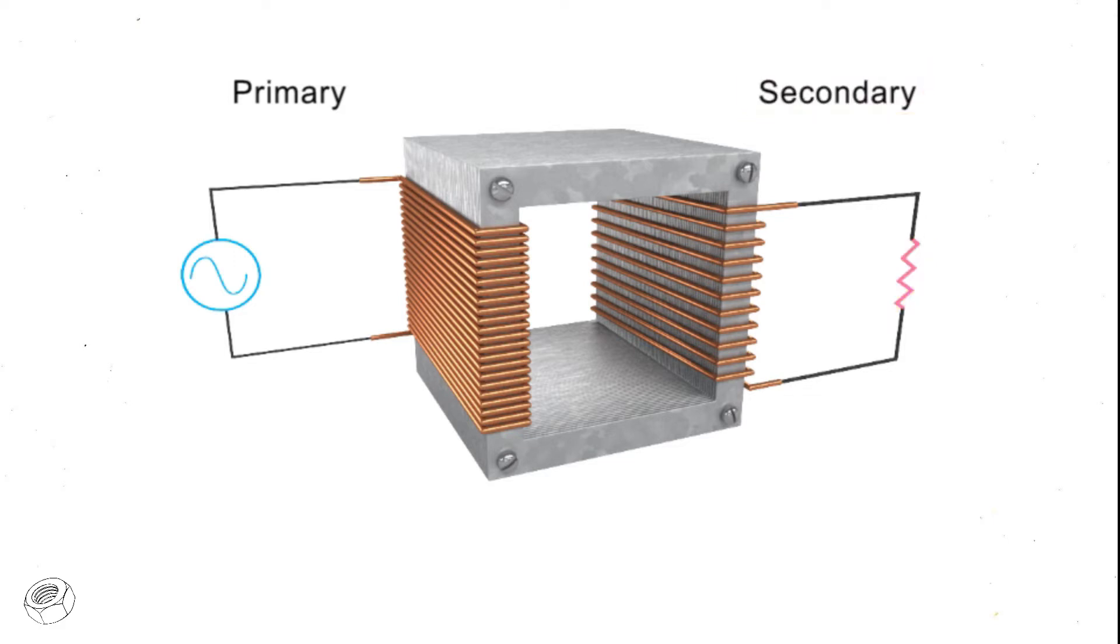The two coils are well insulated from each other and do not form a physical electrical connection. This gives a transformer its unique electricity-altering properties. Transformers can either step up or step down a voltage.